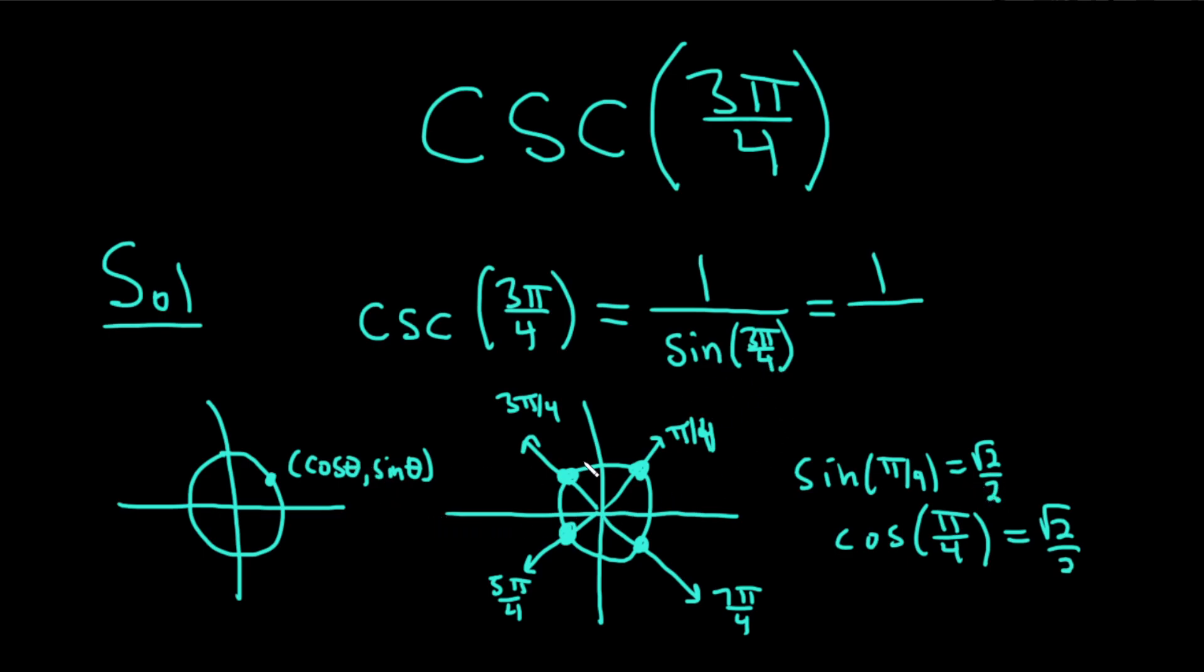So just to think about sine of 3π over 4, you see the π over 4 in this fraction. You say, oh, it's right here. And sine's the y-coordinate, so it's positive. So it's square root of 2 over 2. So using that trick,